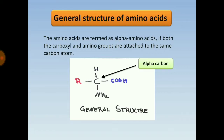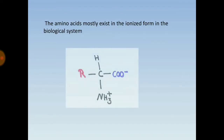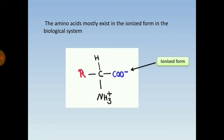The carboxyl group and amino group are both attached to the alpha carbon. Amino acids mostly exist in the ionized form in the biological system — that is, COO⁻ (carboxylate) and NH3⁺ (ammonium).